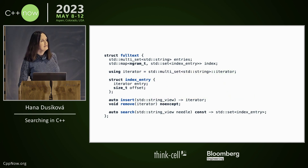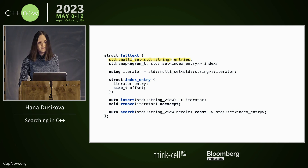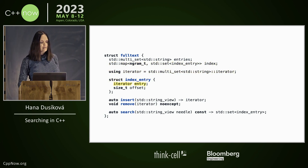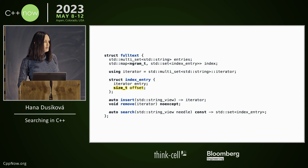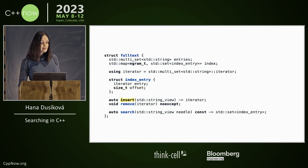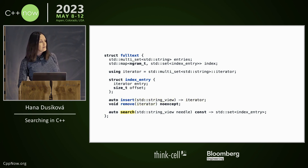Then you have a full text structure, which contains multiset of strings, map of ngrams to set of index entries, some iterator which contains iterator to the original multiset, offset where the ngram is. And then you insert something, you can remove it, and then you can search it.